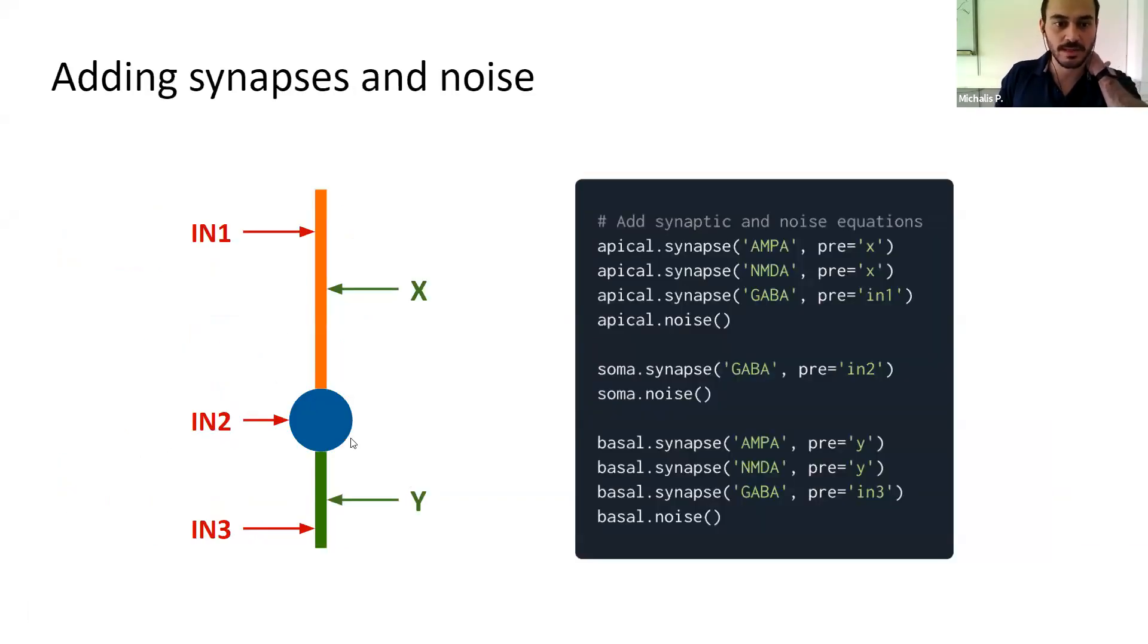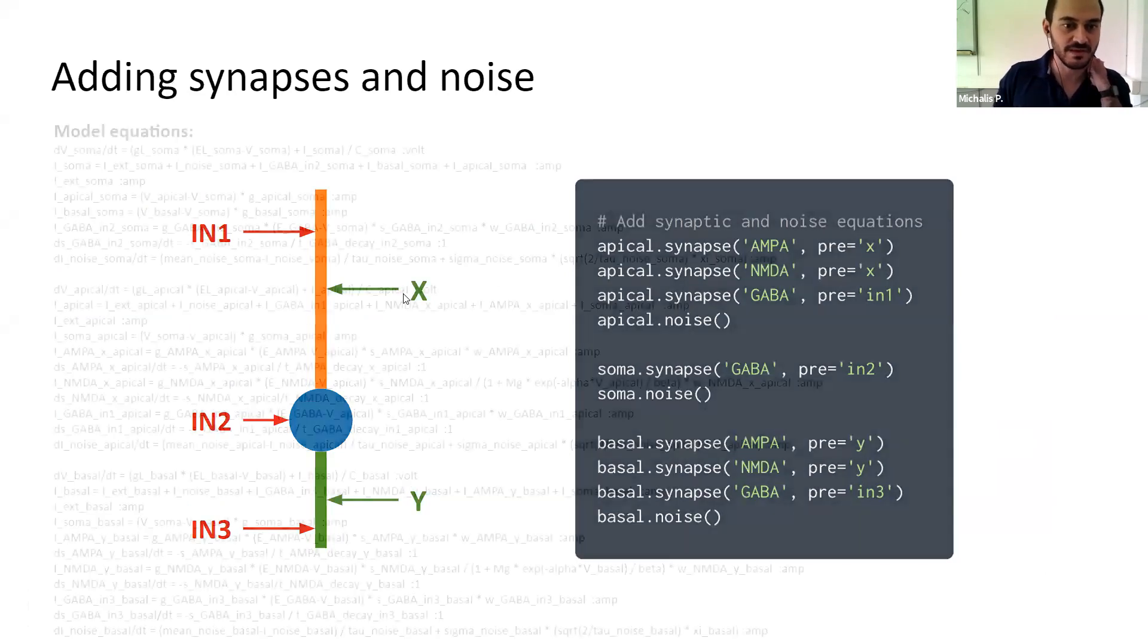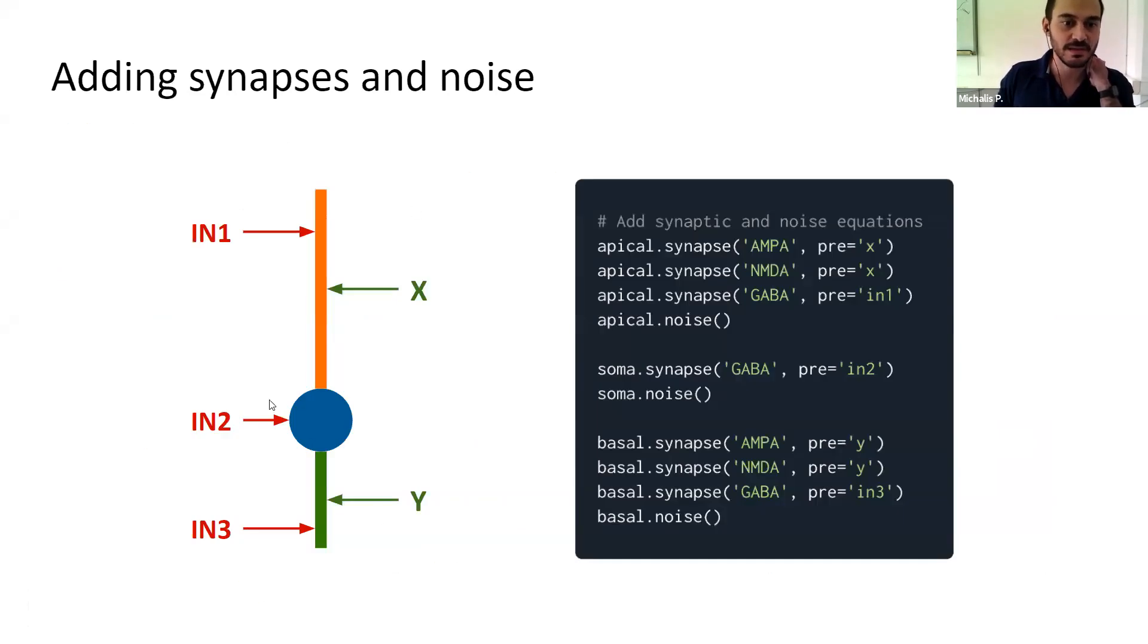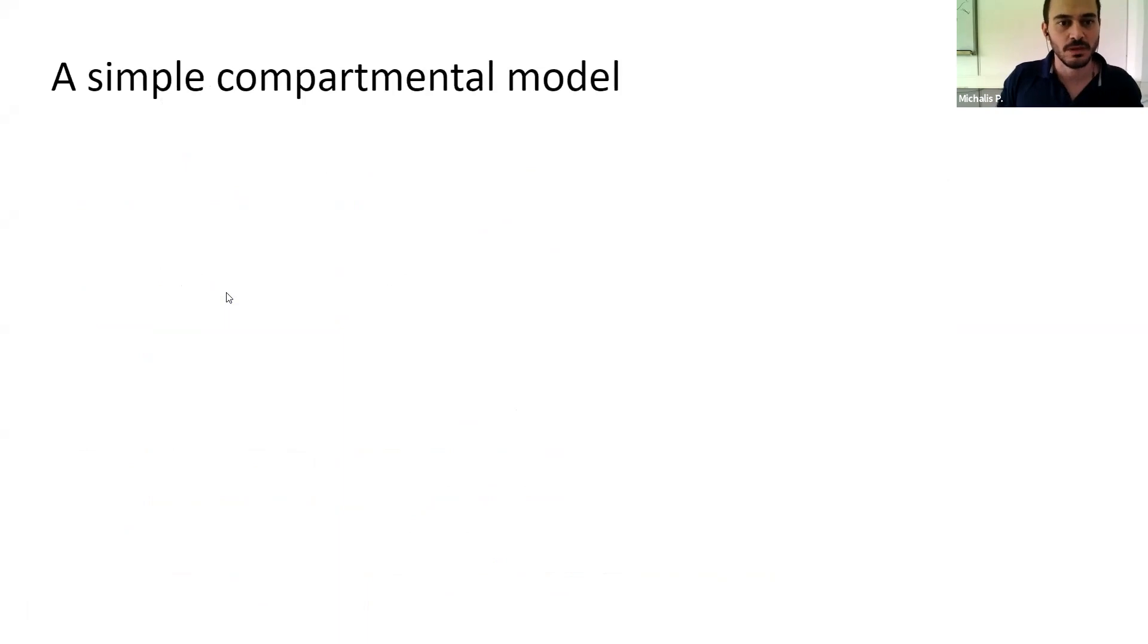And if you want to have something more complex, let's say you have three compartments and three different pathways, either excitatory or inhibitory, you can add them with just one command. For example, AMPA synapses, you will just take the compartment and you type dot synapse. And just for this very simple example, with three compartments and five pathways, you have all these equations that in the past would be really tough and error prone to write.